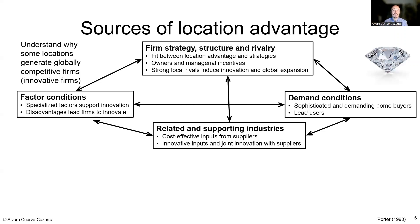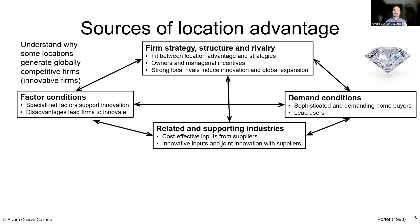The fourth force is firm strategy, structure, and rivalry. The argument is that intense local competition in a particular location is good for innovation. It may not be good for profitability — companies must compete hard — but the companies that survive will be far more innovative because they are constantly trying to out-innovate each other. With all four dimensions together, companies in certain locations become generally more innovative and acquire a location advantage.